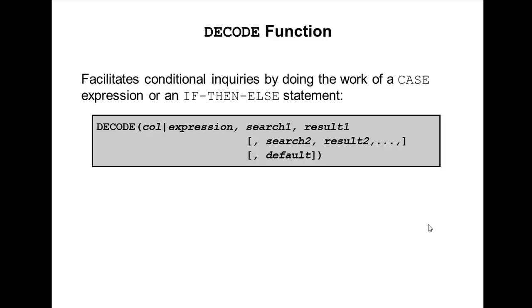What is the syntax? The basic syntax is: DECODE(column or expression, search1, result1, search2, result2, ...). If the expression equals search1, you get result1. If the expression equals search2, you get result2, and so on.